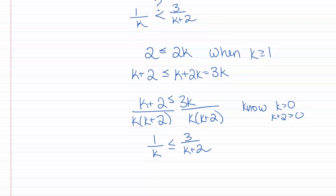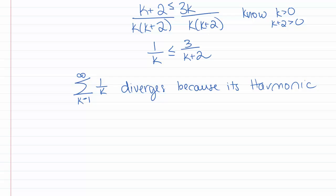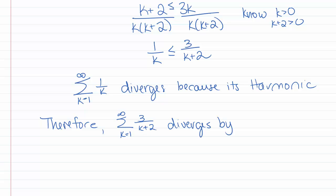So now we can state that the sum k goes from 1 to infinity of 1 over k diverges, because it's harmonic. Therefore, the sum k goes from 1 to infinity of 3 over k plus 2 diverges by the comparison test.